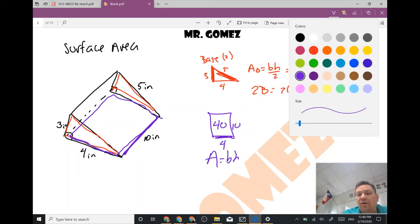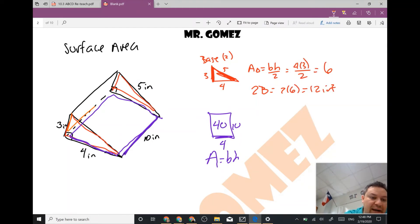Now I have another rectangle on the back and it's right here and I'm going to draw this on the side. The height is also 10 and the base is going to be the 3 right here. Same formula, base times height, so this one is going to be 30.